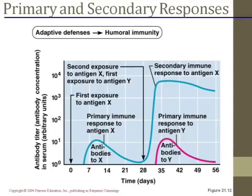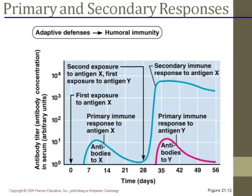Looking at the graph: on first exposure, around the fifth day you get enough antibodies in the bloodstream to start making a difference — antibody production is slow compared to the other solutes in your blood. On a second exposure, look how much faster and stronger the response is. The antibody titer — T-I-T-E-R — is the amount of immunoglobulin in the blood, and it's much higher and faster on second exposure.